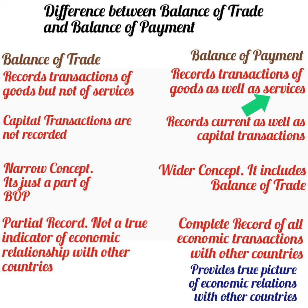For example, borrowings from abroad will not be a part of balance of trade but it will be a part of balance of payment, as this is a capital transaction. Capital transactions are not included in balance of trade but they are included in balance of payments.